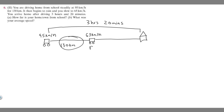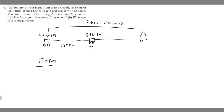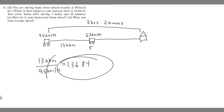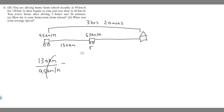Let's find the time for the first part since it's pretty easy. All you have to do is take how far you traveled and divide it by the speed you were going. So 130 kilometers divided by 95 kilometers per hour — the kilometers cancel — and 130 divided by 95 gives us 1.3684 hours. So that's how long the first leg took.